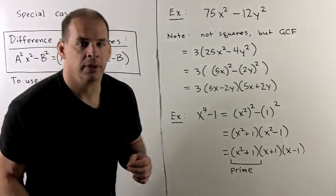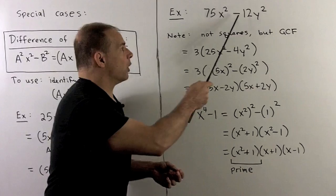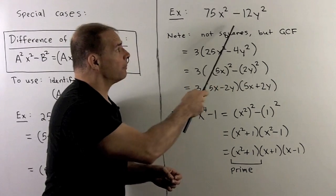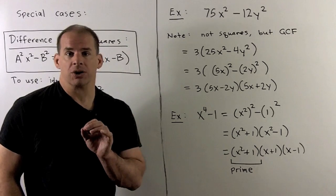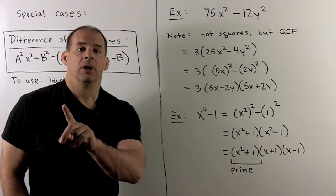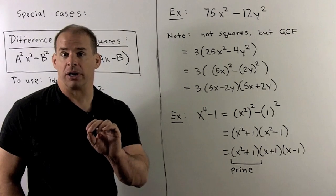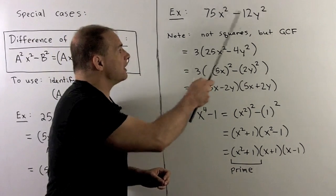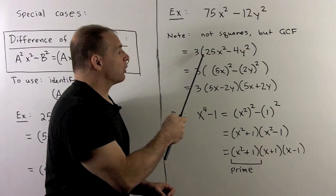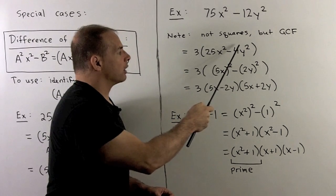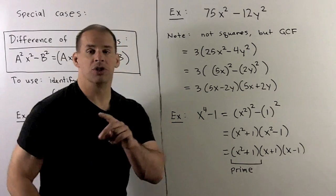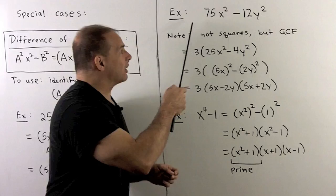A common situation: something like 75x² minus 12y². Note we're missing the middle term, and we have a minus sign, so it feels like a difference of two squares. The problem is 75 and 12 are not perfect squares. We should always factor out the greatest common factor first — here we factor out 3, leaving 25x² minus 4y². Now difference of two squares applies: (5x)² minus (2y)², giving (5x + 2y)(5x − 2y). Multiply everything out to verify you get back the original polynomial.